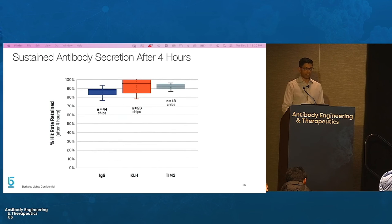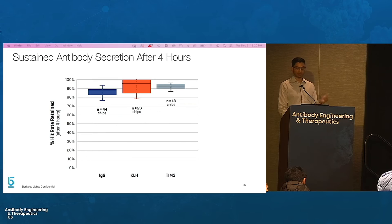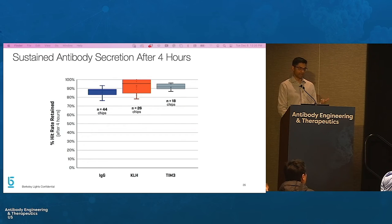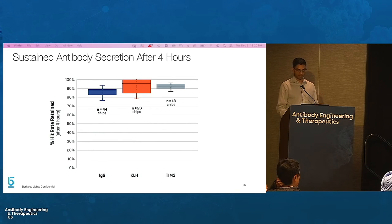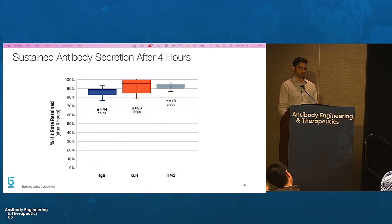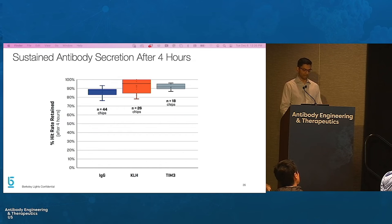The vast majority of these activated B-cells continue to secrete antibodies after four hours of assays, as measured using bead-based assays for IgG secretion. The lengthy secretion time enables multiple assays to be performed in order to functionally profile which ones are the true lead candidates.